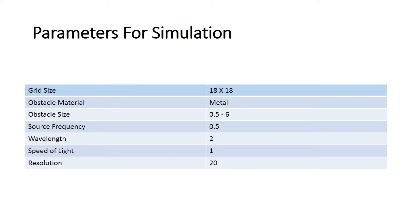We are going to simulate wave scattering using MEEP software. We have defined an 18 by 18 grid in which we place a point source of fixed frequency 0.5. For our simulations, we consider speed of light to be 1 and hence our wavelength is 2. We place an obstacle made of metal a few wavelengths away from the source and vary the length of this obstacle from 0.5 to 6, keeping its thickness constant.